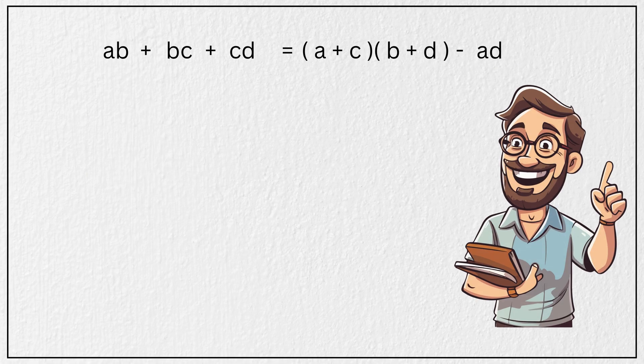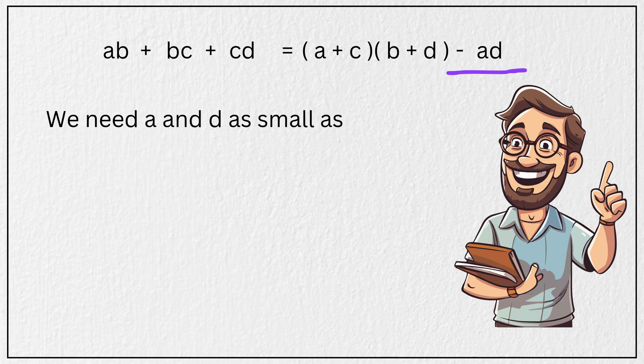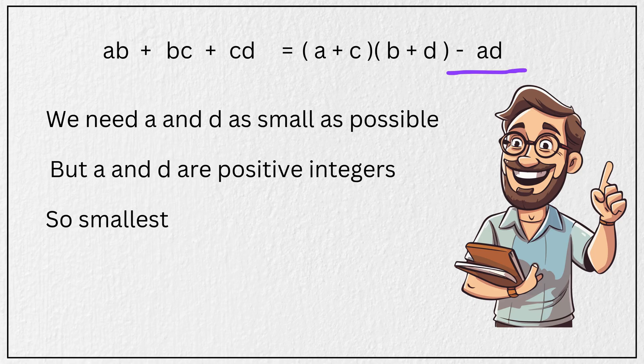Now look carefully to make this subtraction as small as possible. We want value of A and D to be as small as possible. And since we have told that A and D are both positive integers, the smallest value they can have is 1. So let's set A equal to 1, and D equal to 1.